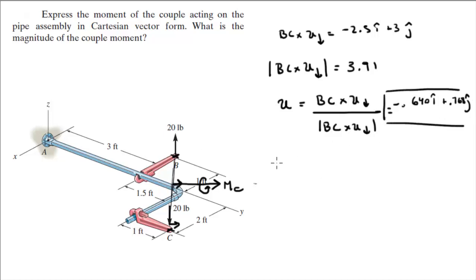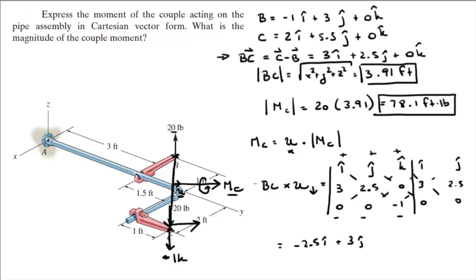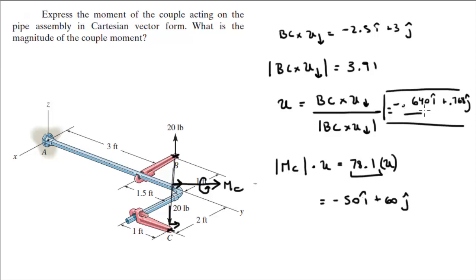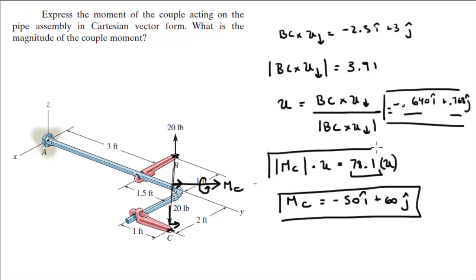Now that we have the unit vector, multiply it by the magnitude of the couple moment: 78.1 × (−0.640i + 0.768j). This gives the Cartesian vector form of the moment as approximately −50i + 60j foot-pounds. The magnitude is 78.1 foot-pounds — that's the final answer for the magnitude, and −50i + 60j is the final answer for the Cartesian vector form.